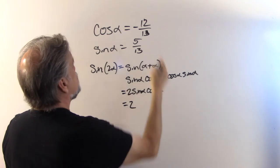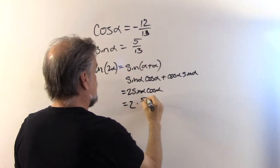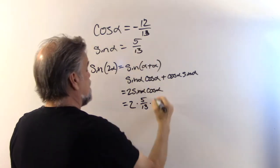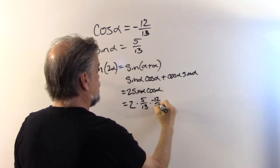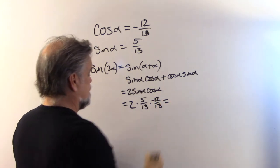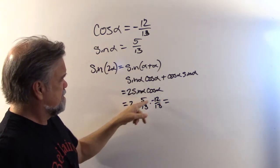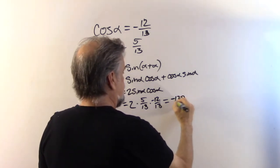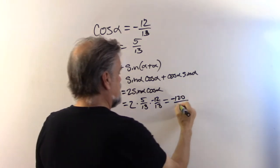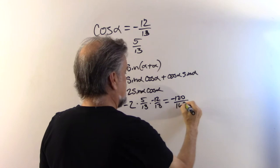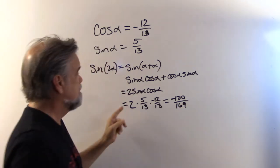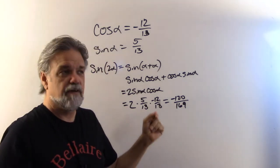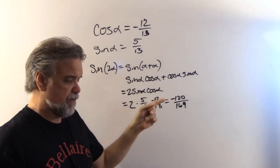I know what that is: 2 times 5/13 times negative 12/13. Two times 5 is 10, times negative 12 is negative 120, and 13 times 13 is 169. So the sine of 2α is negative 120/169.